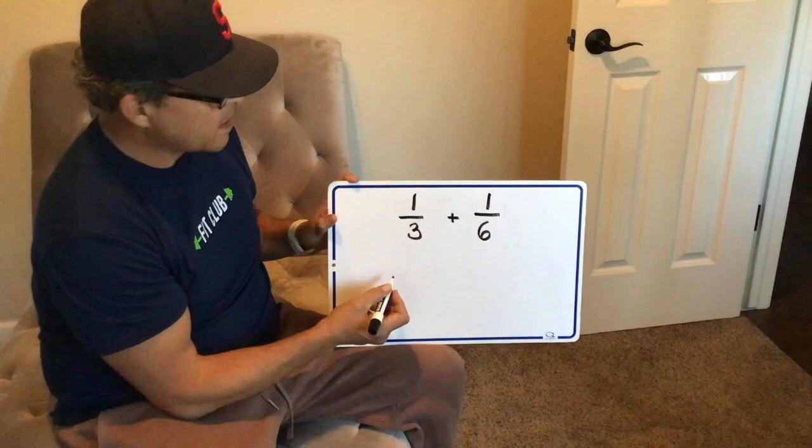Now since 3 is a factor of 6, 6 would be our least common denominator.